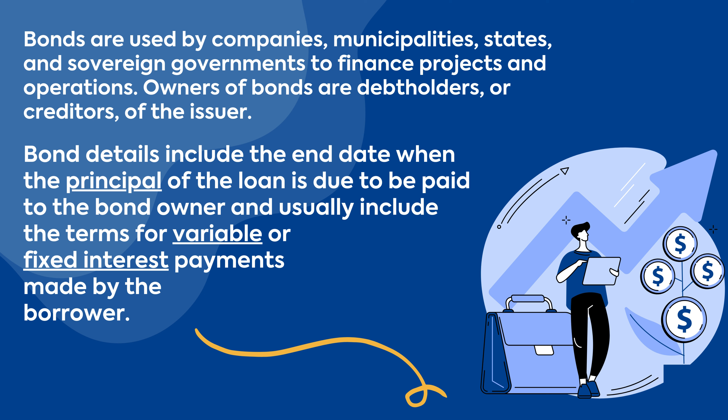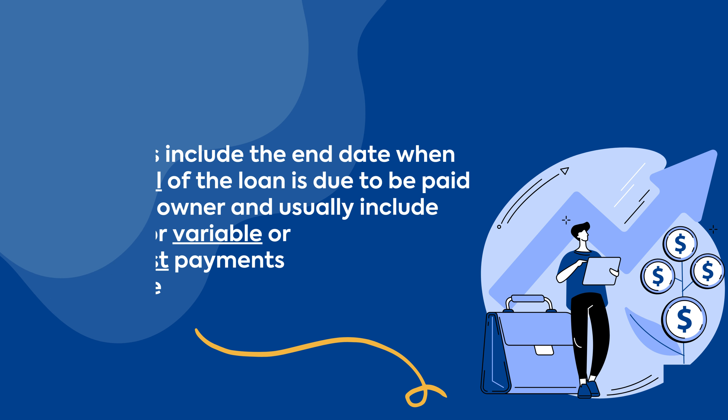Owners of bonds are debt holders, or creditors, of the issuer. Bond details include the end date when the principal of the loan is due to be paid to the bond owner, and usually include the terms for variable or fixed interest payments made by the borrower.